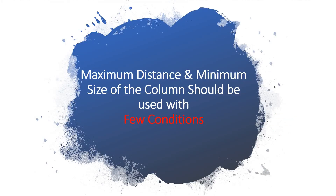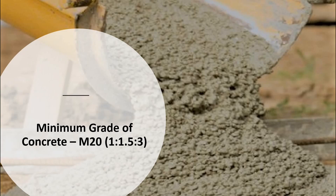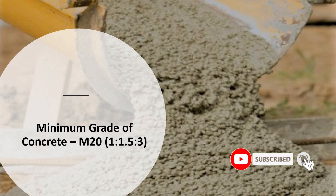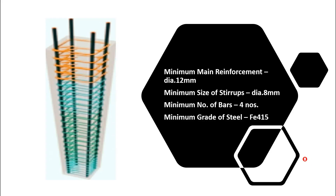All these maximum distances and minimum sizes of the column should be used with a few conditions. The first condition is the minimum grade of concrete should be M20, that is 1:1.5:3 mix ratio. Next, the minimum main reinforcement diameter should be 12 mm. Next, the minimum stirrups should be 8 mm diameter.